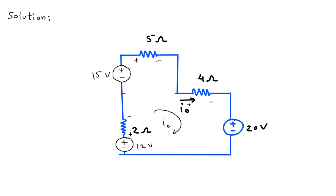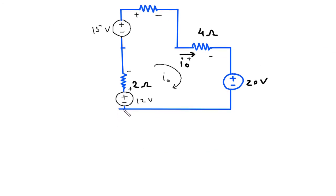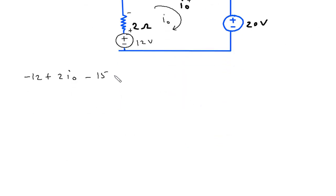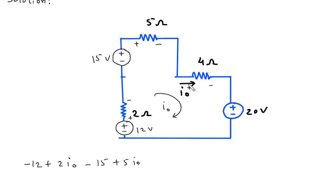Now let's say we will start from here. So this will be negative. So this will be minus 12. Then plus 2, plus 2 I O. Then minus 15. Then plus 5 I O, then plus 4 I O, then plus 20, plus 20 is equal to 0.